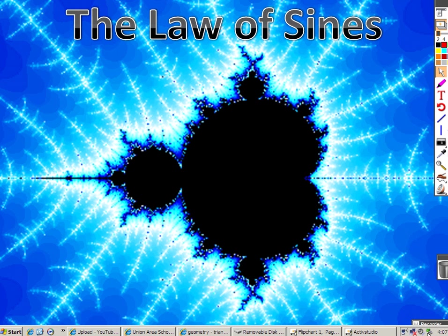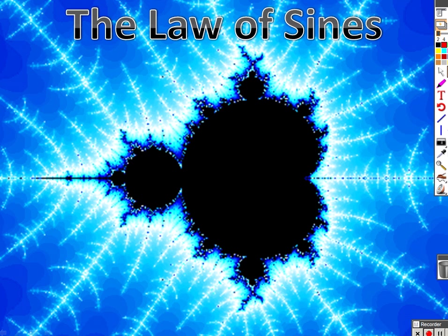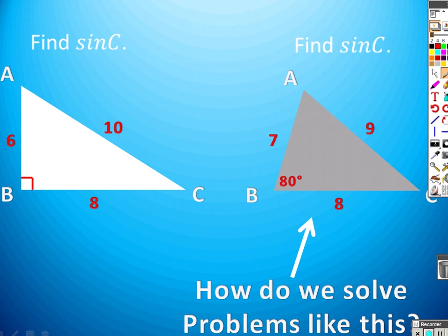All right, here's a brief overview of the law of sines, which we did in class the other day. We want to start by looking at what we have been doing. We've been dealing with right triangles all this time, and it was real simple because we could say sine of C is just opposite over hypotenuse, 6 over 10. However, we don't have right triangles all the time. It's the real world. We're not always that lucky. So how do we solve problems where we don't have right triangles?